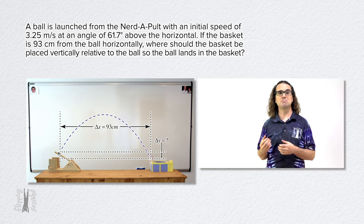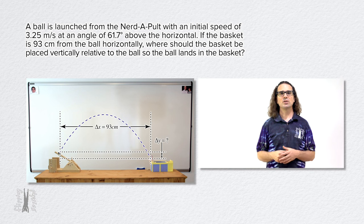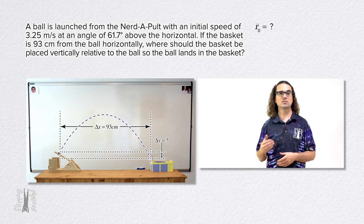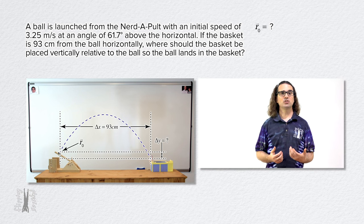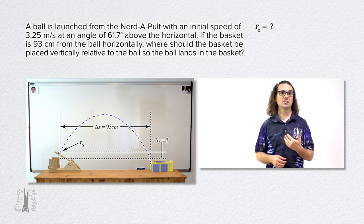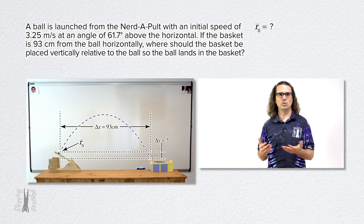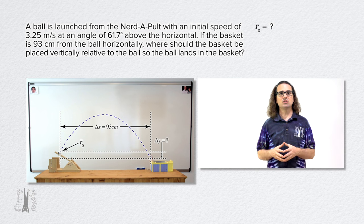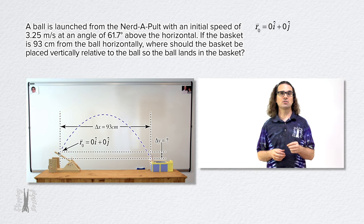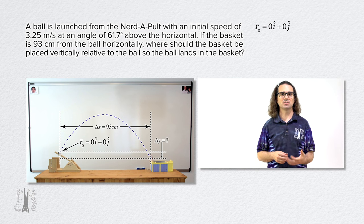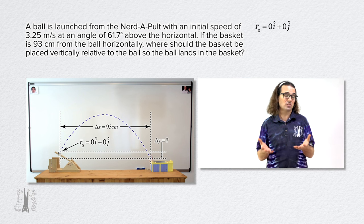Because these positions are in multiple dimensions at once, we use the symbol r instead of x, y, or z. So, the initial position or r-naught is, well, we get to choose that. So, let's choose 0i plus 0j as the initial position of the ball. The ball starts at 0.